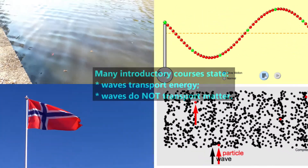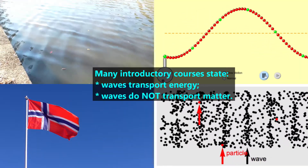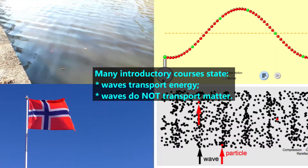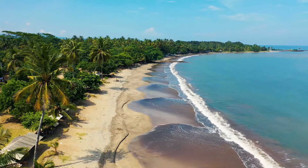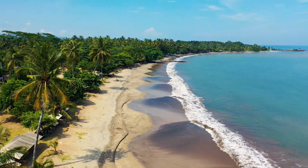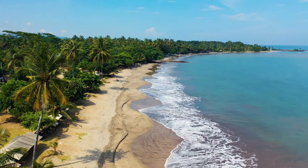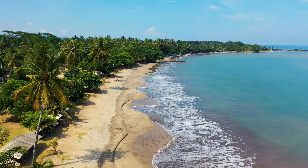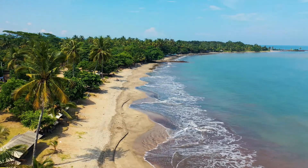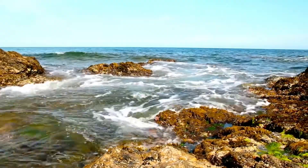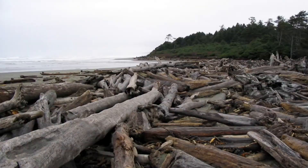Because of these observations, introductory courses usually state that waves transport energy but do not transport matter — where transport means to move something from one place to another. But this may differ from your observations at the beach. Every wave that reaches a shore washes onto the land, then flows back into the ocean, so each wave does transport matter, albeit only a short distance. Water waves are a major exception to the general observation that waves do not transport matter — for example, driftwood has been transported to the shore by ocean waves.